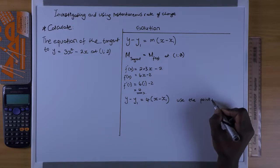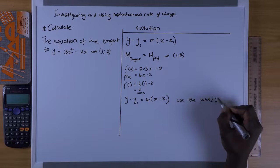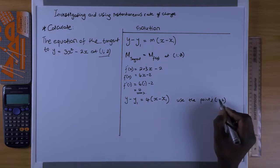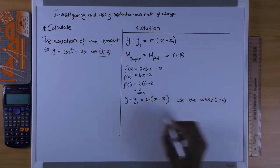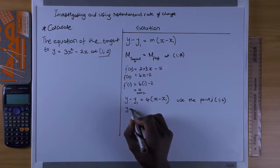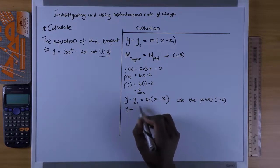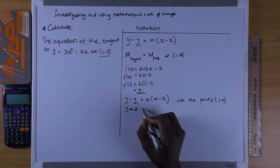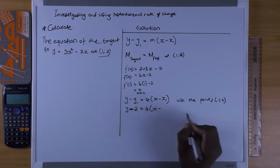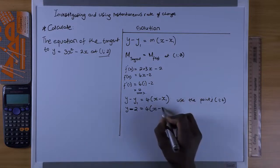We use the point that was given to us: (1, 2). When you see x₁ you put 1, when you see y₁ you put 2. So the equation becomes y - 2 = 4(x - 1).